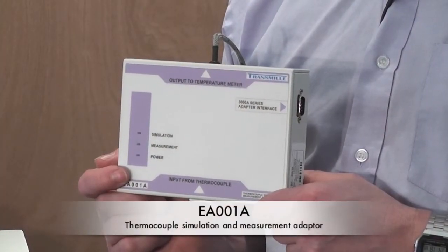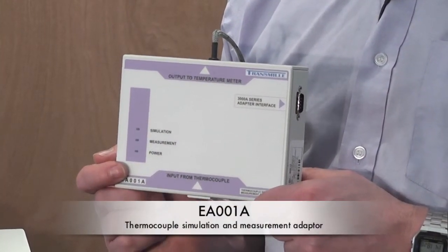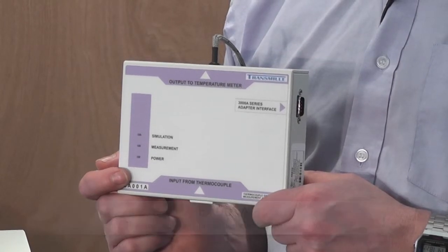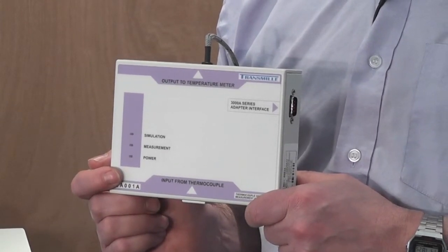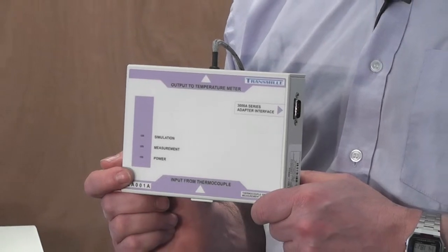The thermocouple simulation and measurement adapter EA001A has been designed to be used with the 3000A series calibrator to enable simulation and measurement of 11 of the most common thermocouples.